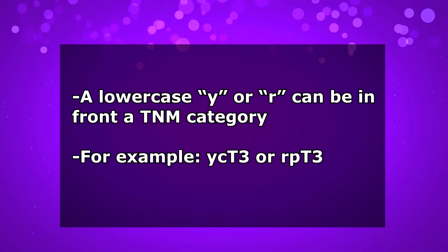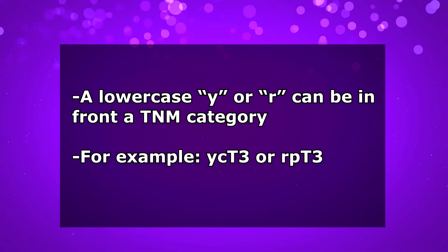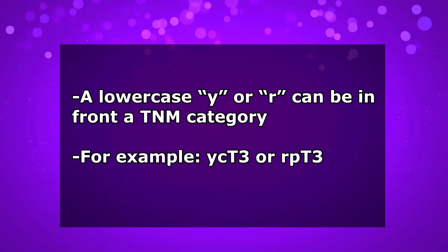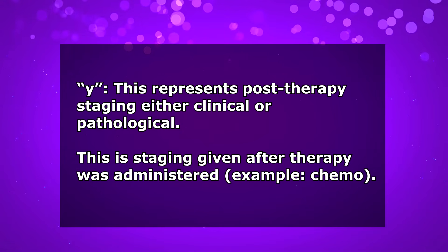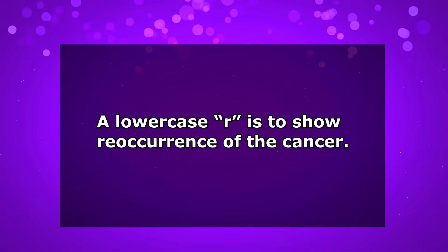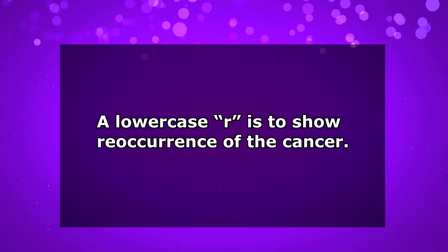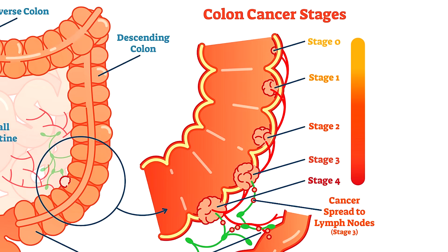A lowercase y or r can also appear in front of the TNM category, for example ycT3 or rpT3. The lowercase y represents post-therapy staging — either clinical or pathological — given after therapy like chemo was administered, showing how much tumor remains before surgery. A lowercase r shows reoccurrence of the cancer. The TNM system is used to calculate a numerical stage system from stage zero to stage four, and this is how patients typically refer to their cancer — like colon cancer stage three — rather than using the full TNM notation like T1AN0M1.